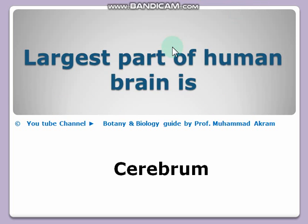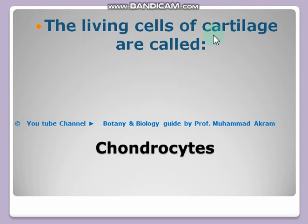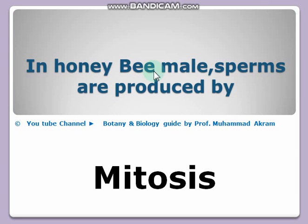The largest part of the human brain is the cerebrum. The living cells of cartilage are called chondrocytes. In honeybees, male sperms are produced by mitosis, not meiosis.